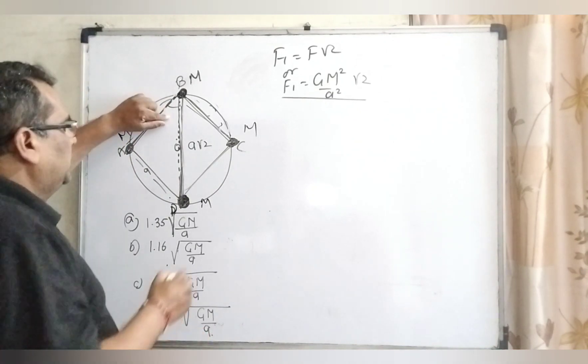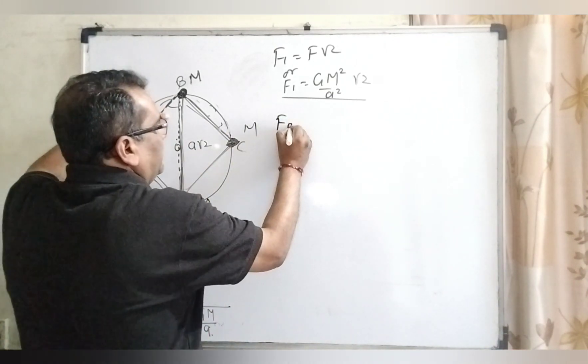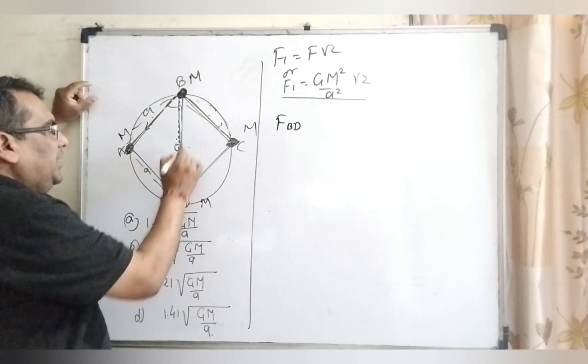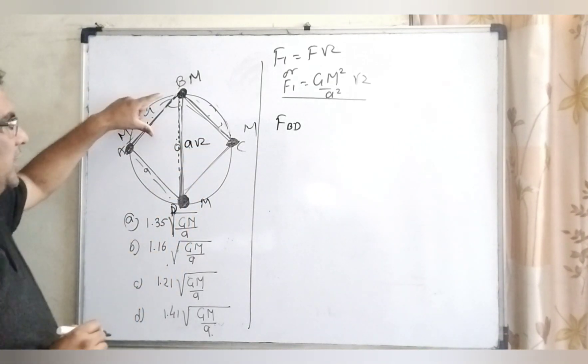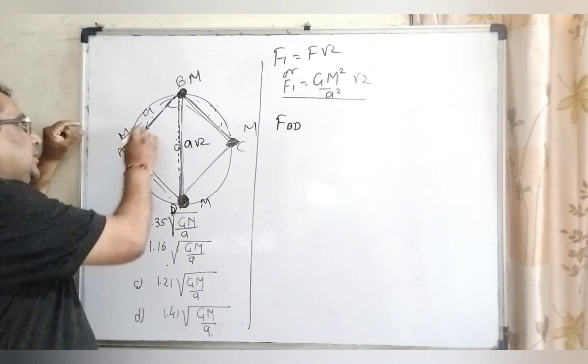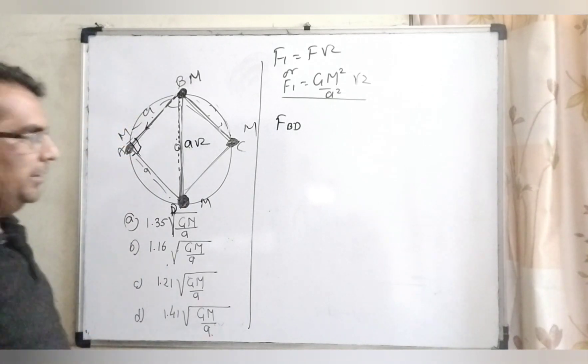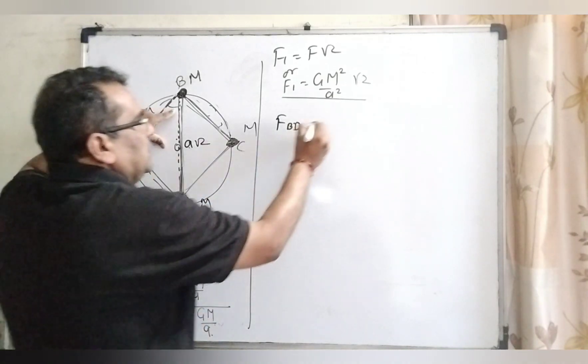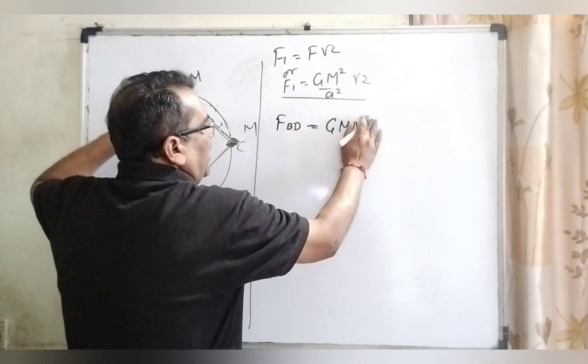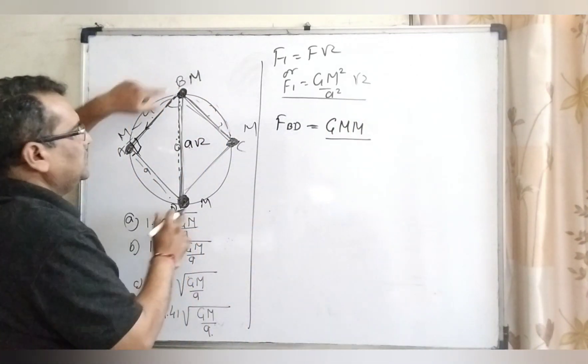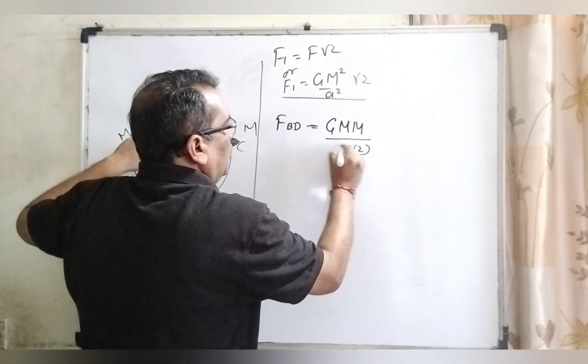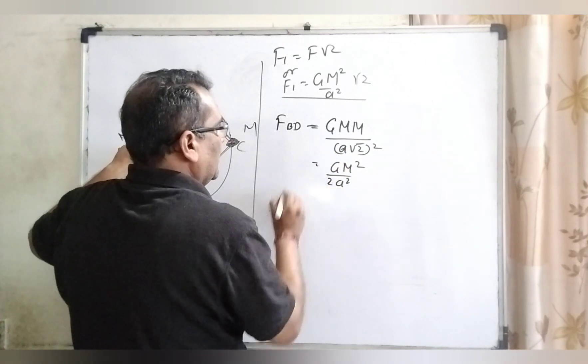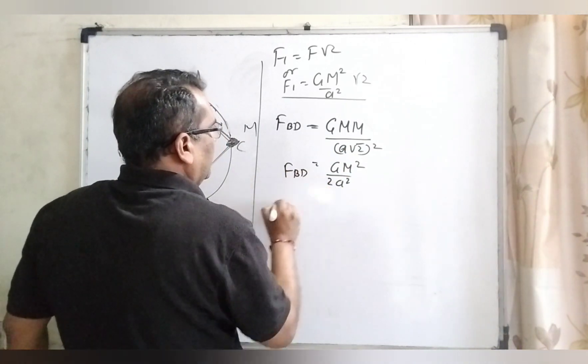Now, we are going to find out F of BD. F of BD. What is the distance between the BD? A root 2, by using Pythagorean theorem. You know that very well. The angle between the two adjacent sides is 90 degree. So the distance is A root 2. Then G, M, M, M into M. And what is the distance? A root 2 whole square. Then GM square, A square and root 2 square means 2. It is the F BD.